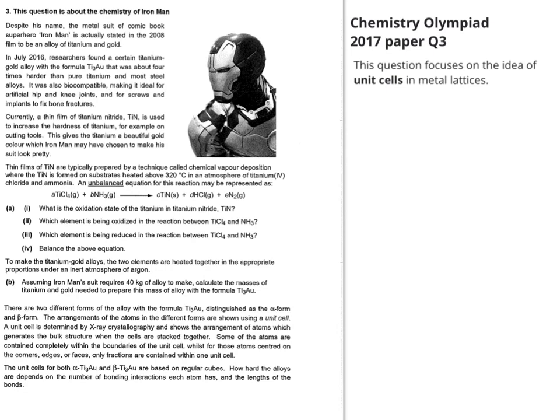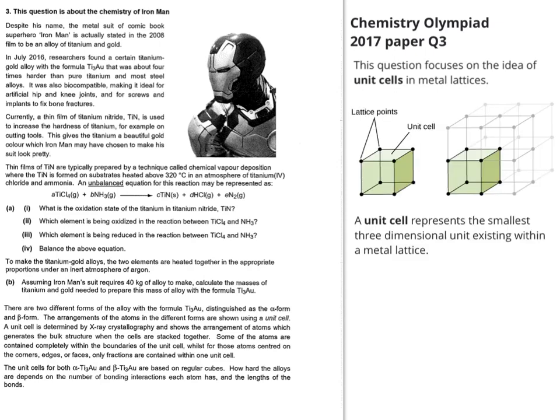I've mentioned the idea of unit cells. In case you haven't come across unit cells before, it's actually not really an A-level idea, so I'm going to spend a couple of minutes just going through very briefly what a unit cell is. In very simple terms, a unit cell represents the smallest three-dimensional unit existing within a metal lattice. At the corners you have what are called lattice points.